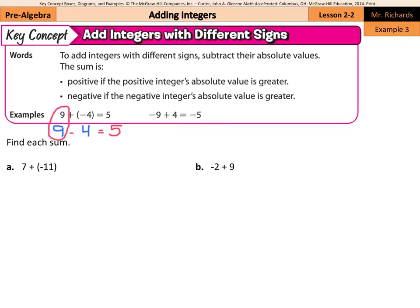Compare that to negative 9 plus 4. The absolute values are again 9 and 4, but this time the 9 belongs to the negative integer. So the sign of our answer is going to be negative — 9 minus 4 equals 5, but our answer is negative 5.